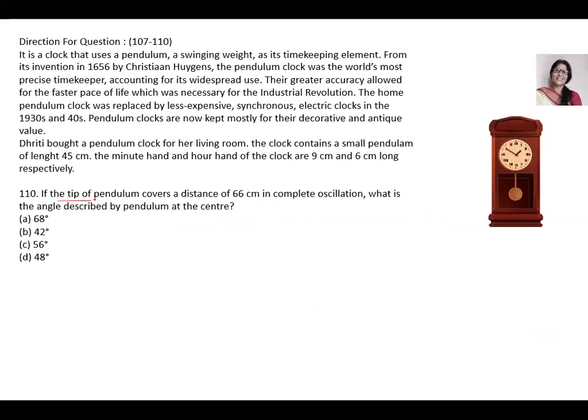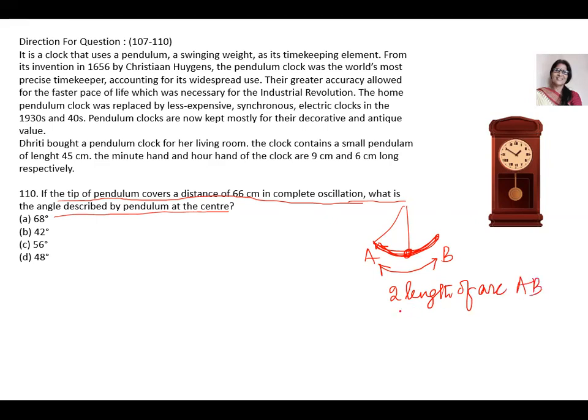Next, if the tip of the pendulum covers the distance of 66 cm in complete oscillation, what is the angle described by the pendulum at the center? So when a pendulum is moving, we say oscillation means from A to B again getting back to A. This is the oscillation. That means it is covering twice length of the arc, twice length of arc AB. So this is given to 66 cm. So twice L is equal to 66 cm. So L is equal to 33 cm.